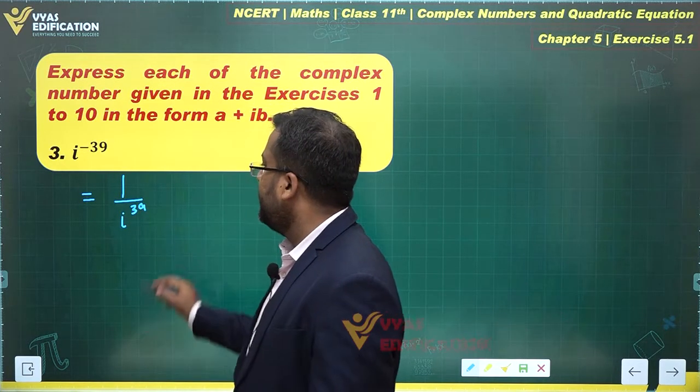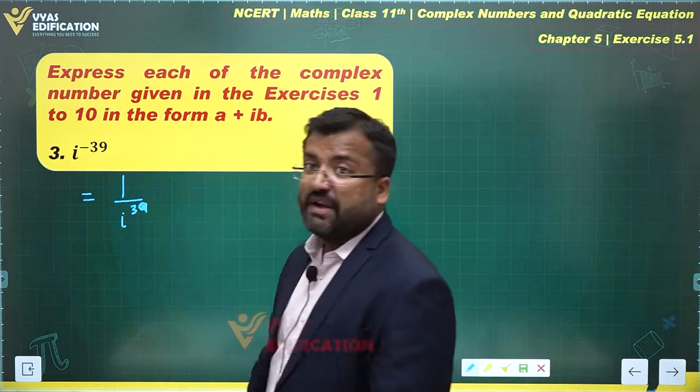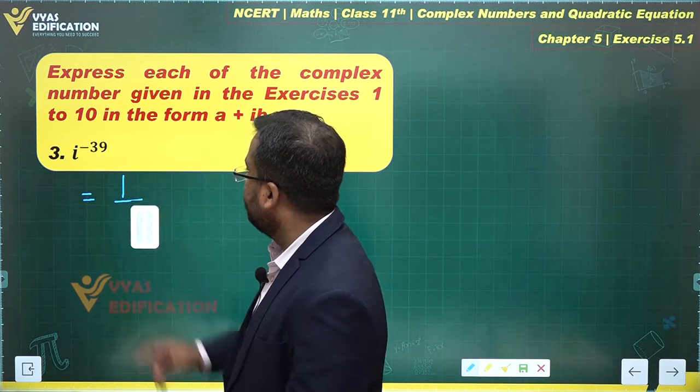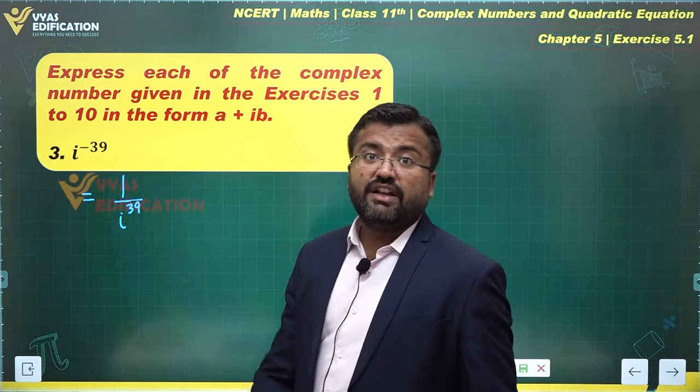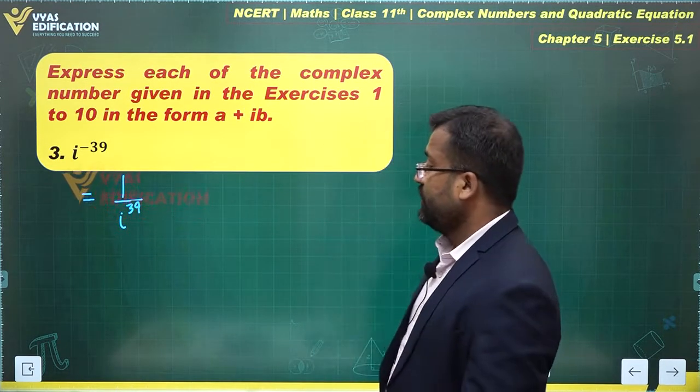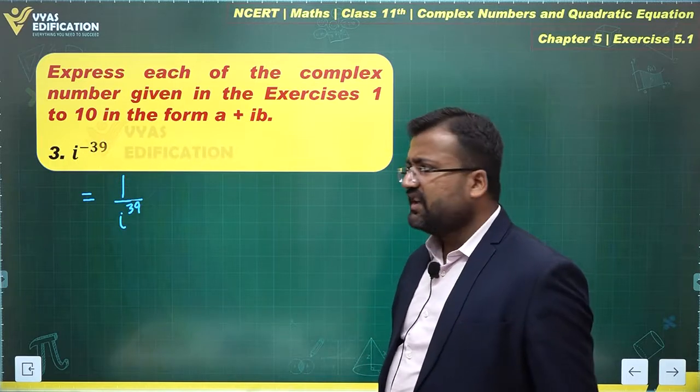Minus 39 in the power can be expressed as 1 over i to the power 39. This will come in the denominator. And how do we simplify this further?